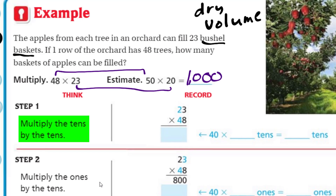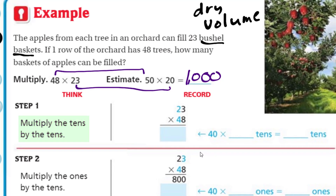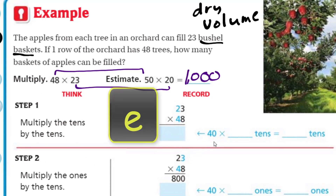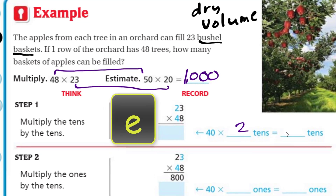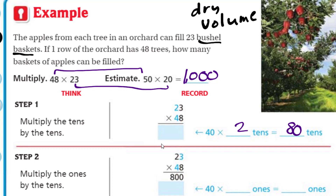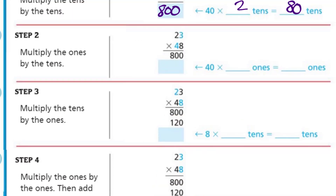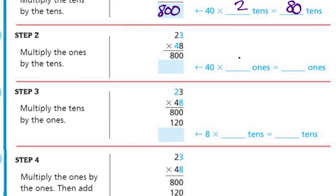Step one: multiply the tens by the tens — 40 times 2 tens. Here it says 40 times 2 tens, which is equal to 80 tens, so we'll write 800 down below as our partial product. Step two: multiply the ones by the tens, which is our 3 — the ones — and our 40. So we have 40 times the 3 ones, giving us 120 ones, so we'll write 120.